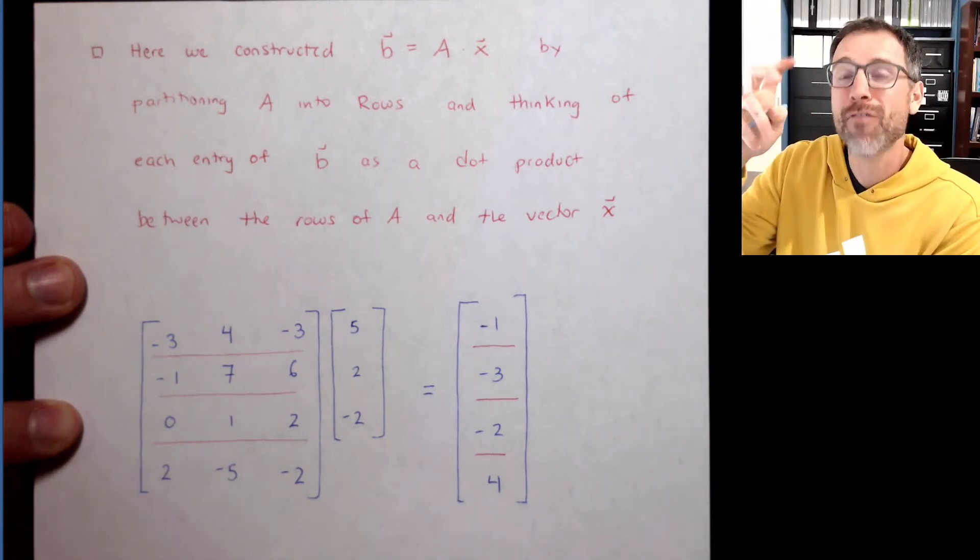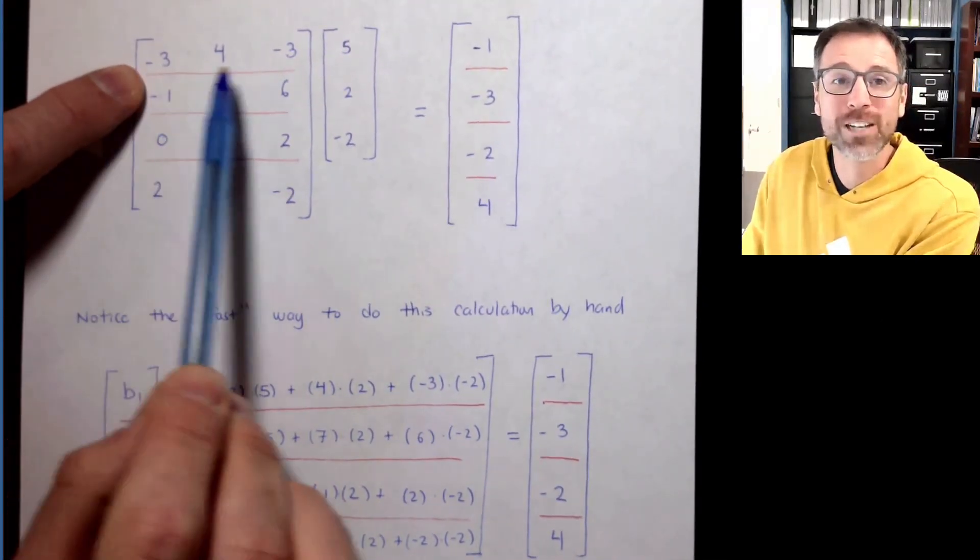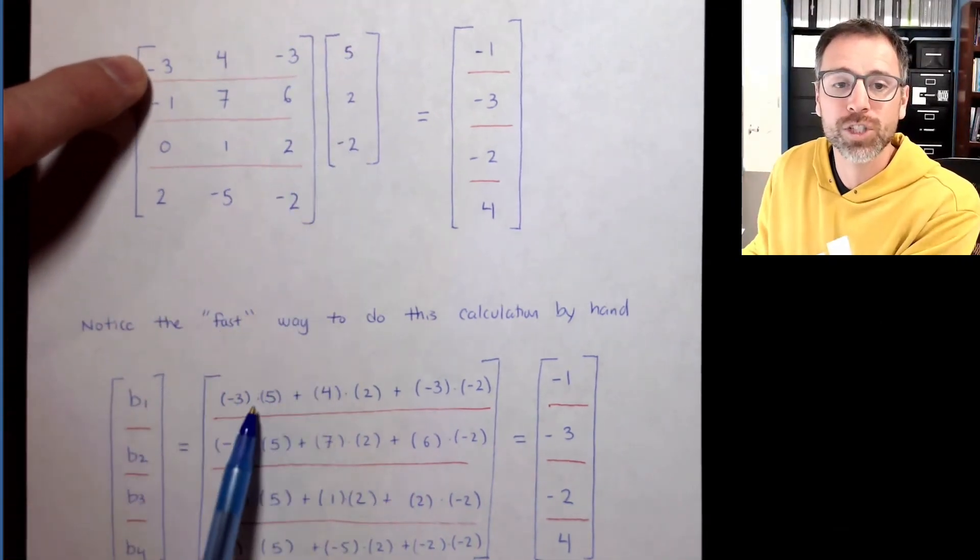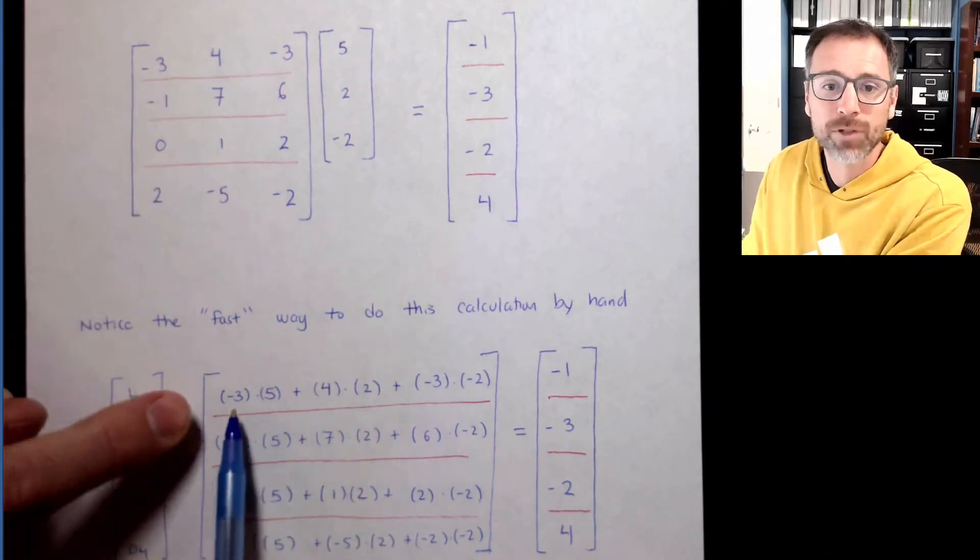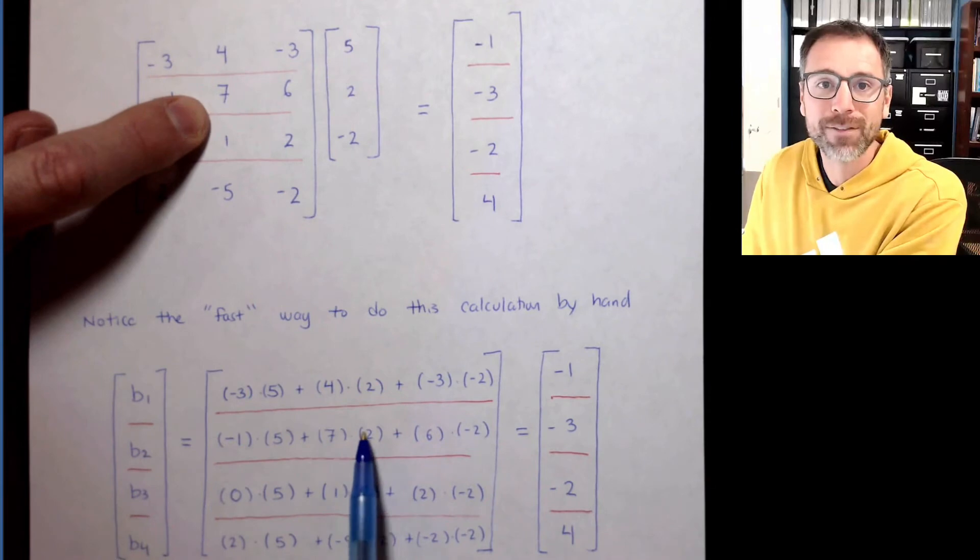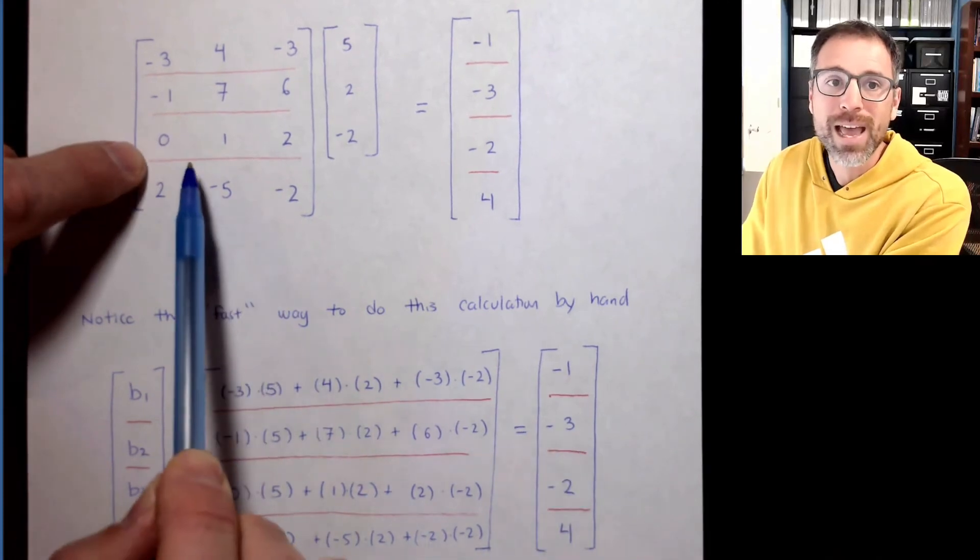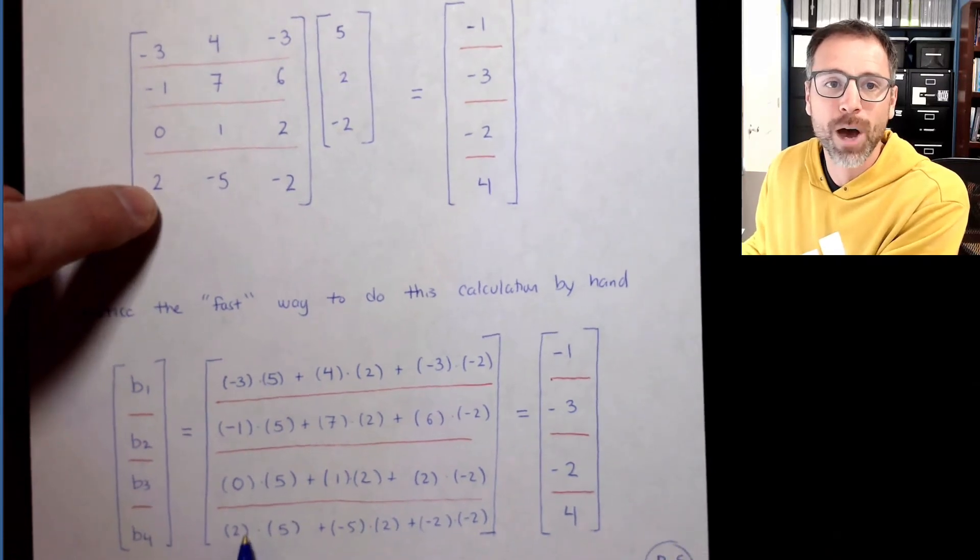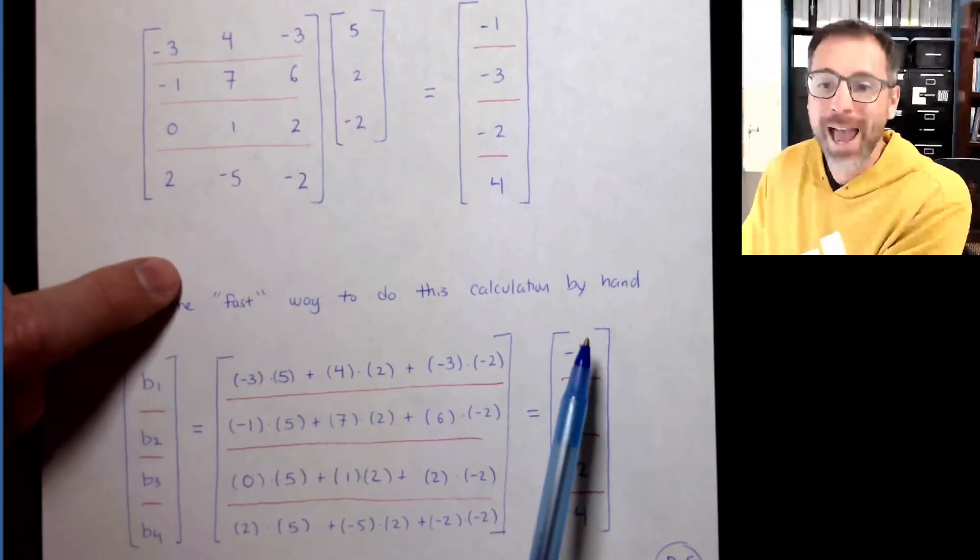For young students that are just getting their head around the definition, the workflow that I just highlighted in my notes is the one that I would suggest. I have seen a quote unquote faster way to do this. Particularly, one thing that you could do is actually partition your matrix into row vectors, and then calculate each one by just traversing the rows down this way. Negative 3 times 5, 4 times 2, negative 3 times negative 2. We traverse across and traverse down, and that gives us each entry.